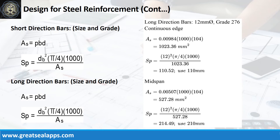At long direction, given continuous edge rho equals 0.00984. B equals 1,000 mm and D equals 104 mm. The area of steel is 1,023.36 square millimeters, and the spacing for 12 mm bar is 110 mm. Given mid-span rho equals 0.00507. B equals 1,000 mm and D equals 104 mm. The area of steel is 527.28 square millimeters, and the spacing for 12 mm bar is 210 mm.